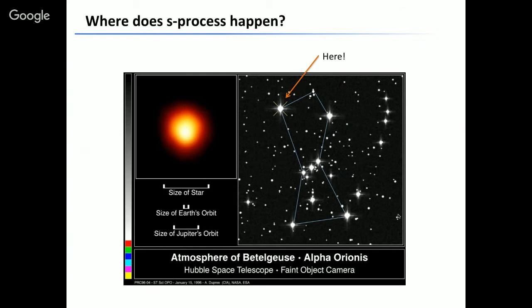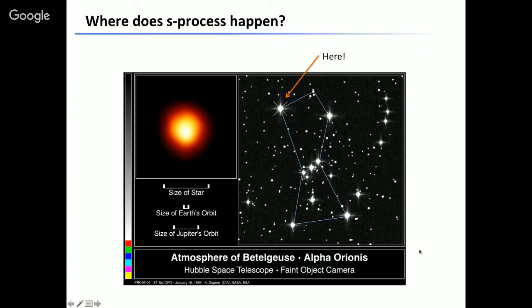Where does the S process happen? If you look at the Orion constellation, there's a slightly reddish star called Betelgeuse — that's where the S process is happening right now. How do we know? The spectrum emitted from that star shows lines corresponding to technetium, a heavy element with a half-life of 4 million years. If it had formed before that star was born, it would have decayed long before hydrogen burning ended. The fact that technetium exists in the star means it must be produced within that star during its lifetime.